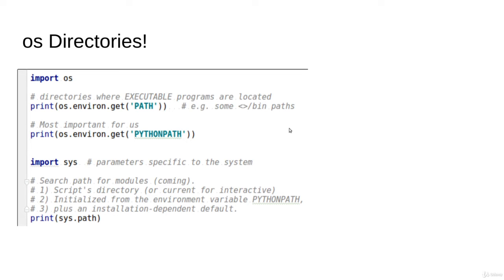There are several directories to be aware of and understand their differences. The first is the environment variable PATH — os.environ.get('PATH') — which returns directories that contain executables, like .exe files in Windows or executables on Mac or Linux, typically /bin paths. The second, and most important for us, is PYTHONPATH, which also contains directories but specifies where our other user-defined modules are located.